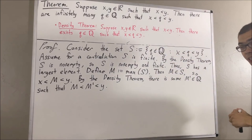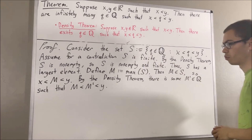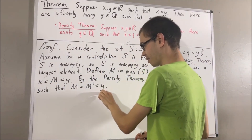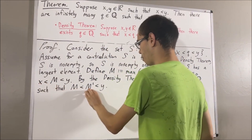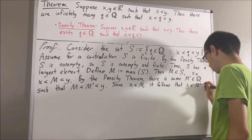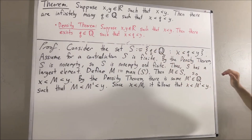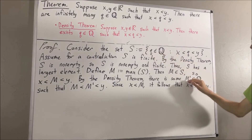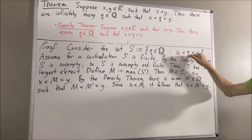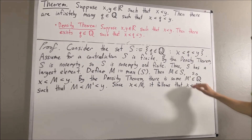It's pretty clear that we can deduce that capital M prime is an element of S. The reason is that x is less than capital M, which is less than capital M prime, which is less than y. So we must have x is less than capital M prime is less than y. Capital M prime is a rational number, and x is less than capital M prime is less than y, so capital M prime is an element of S.